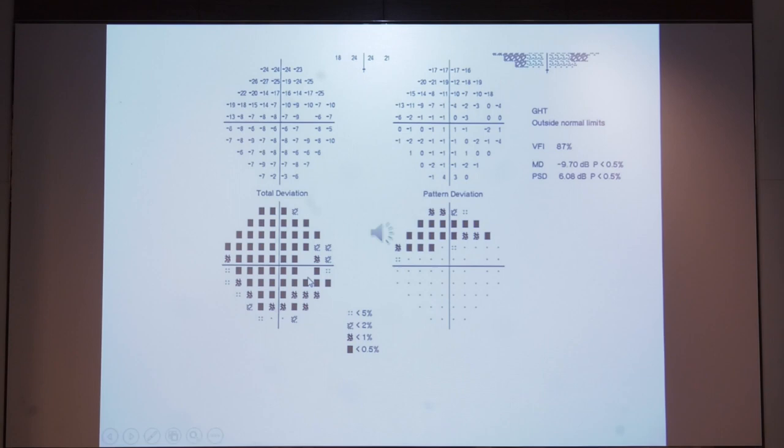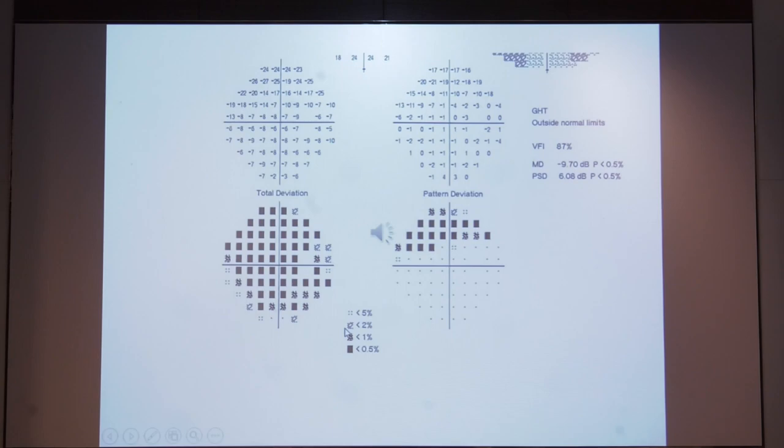In the bottom half of the printout, you have the total deviation plot, which is looking at the values compared to age-matched controls. A minus means that this patient has a lesser sensitivity or there is a field defect in that area. Then you have the pattern standard deviation, which subtracts all the values from the 7th highest point and takes out a pattern deviation. Below that, you have the probability plots, which are coded as dark black or gray or a dot.